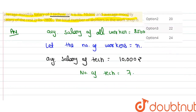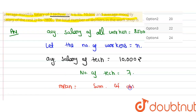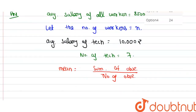आप देखो, हमें पता है mean का formula क्या होता है? Mean का जो formula होता है — that is average का formula — mean होता है sum of observations divided by number of observations. मतलब कि सभी observations का sum divided by total number of observations.